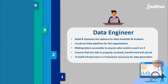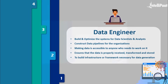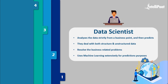The primary responsibilities of a data engineer include ensuring that data is properly received, transformed, and stored, along with building the infrastructure or framework necessary for data integration. Data engineers and data scientists work closely together, and as a result, many interchange these two roles. Basically, data engineers report to data scientists with big data that they prepare in order to be analyzed.